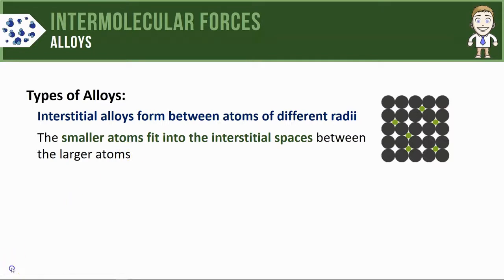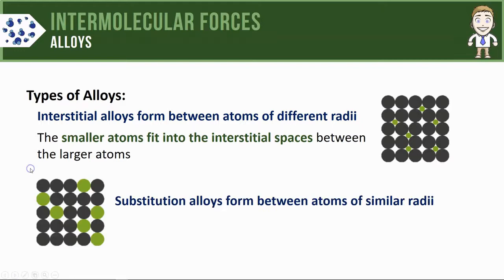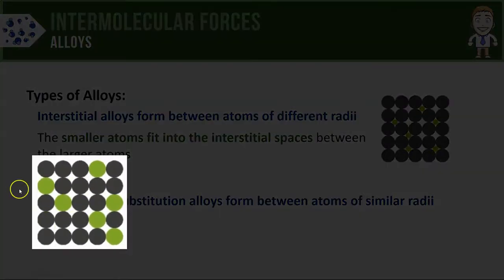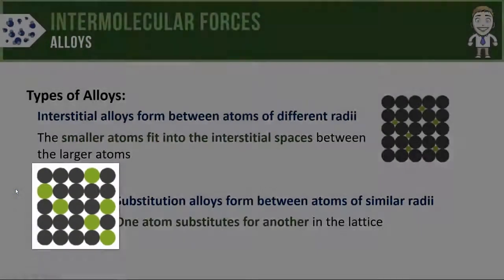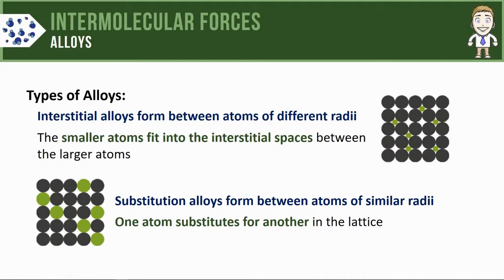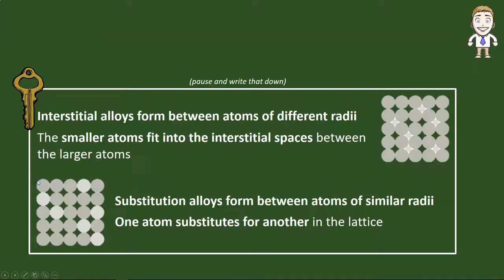There are also substitution alloys that form between atoms of similar radii, like you can see in the model to the left. If the atoms are similar size, one simply substitutes for the other in the lattice.